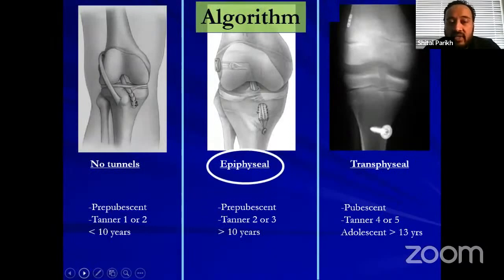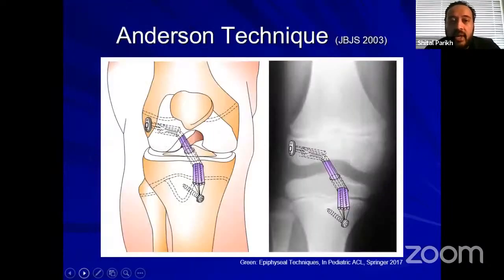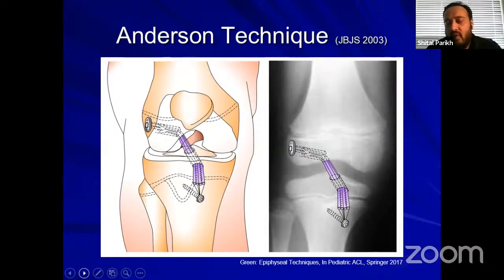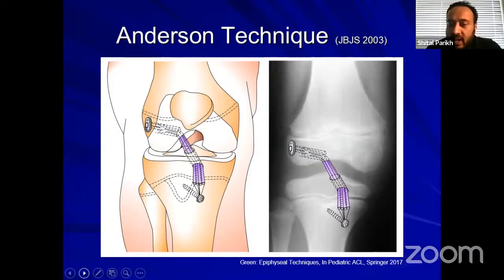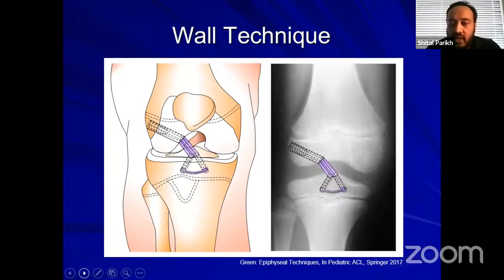The second technique is epiphyseal ACL reconstruction, where you put the graft within the epiphysis of the distal femur and proximal tibia. There are several modifications. The initial technique used suspensory fixation on the femur side and a post below the level of the physis, described by Anderson with very good results. However, there is a theoretical concern that fixing the graft across the physis in front of the tibia may tether tibial growth. In clinical studies there was no issue, but one way to avoid this is to use a complete epiphyseal technique — this is my partner Dr. Wall's technique.